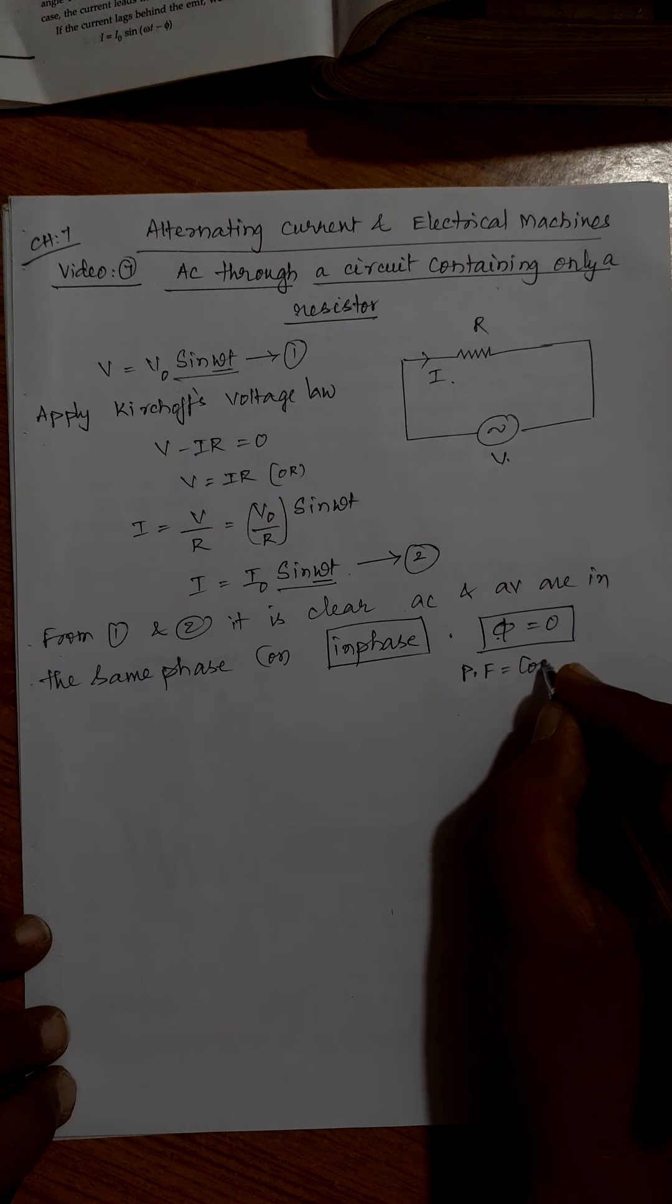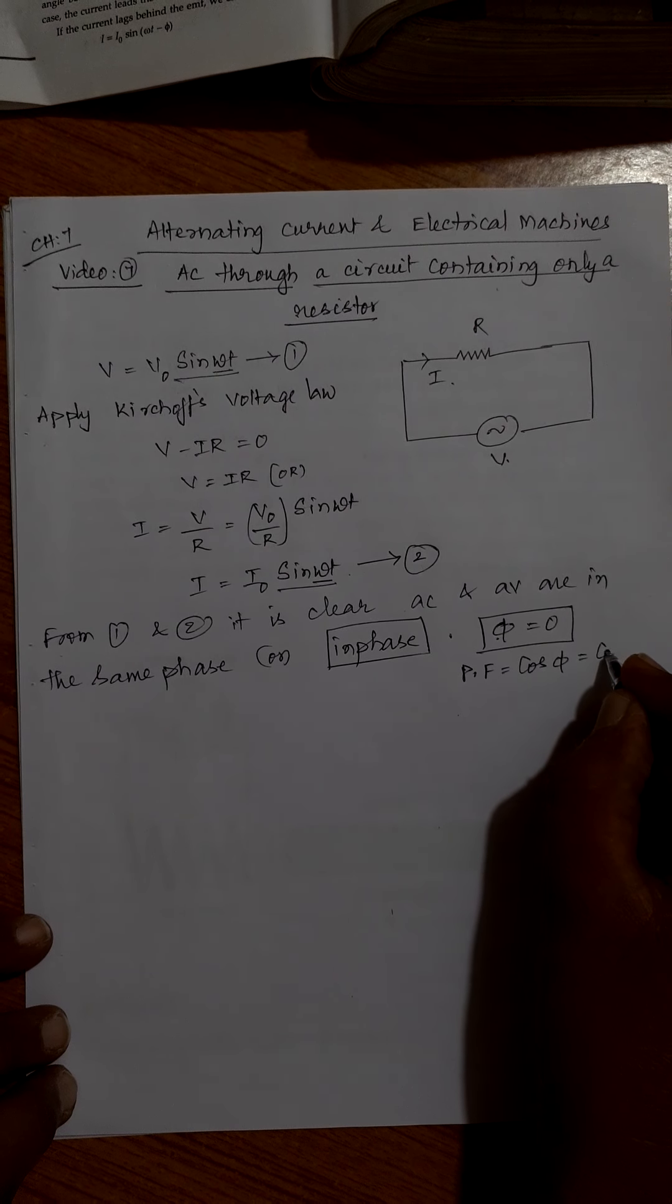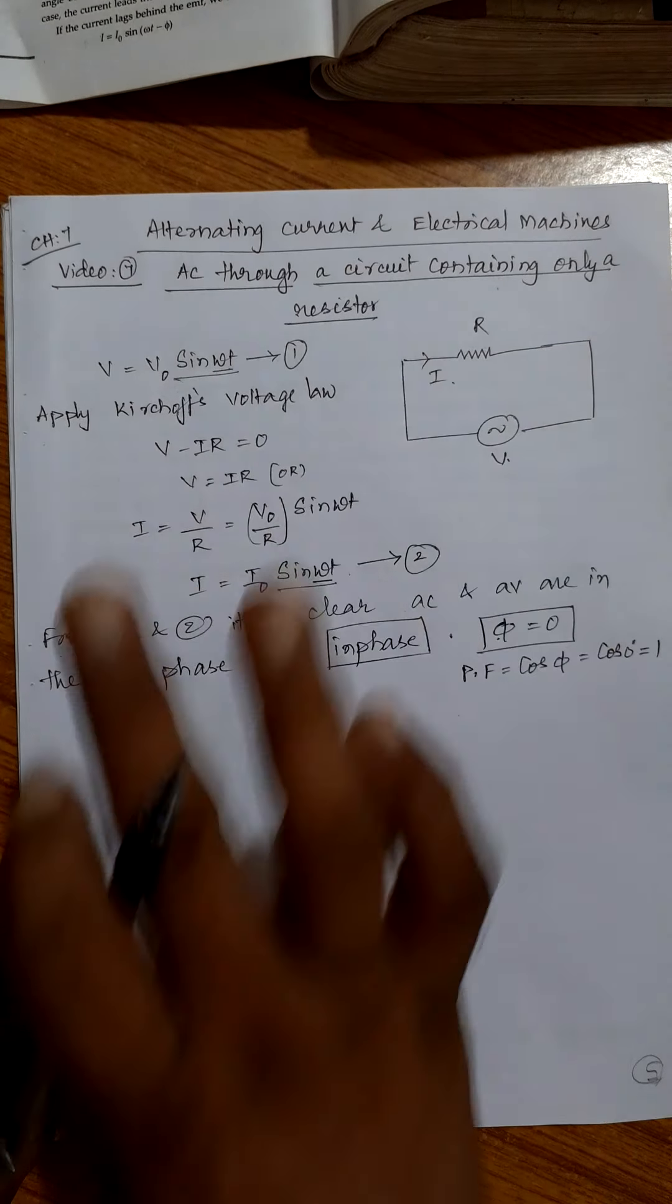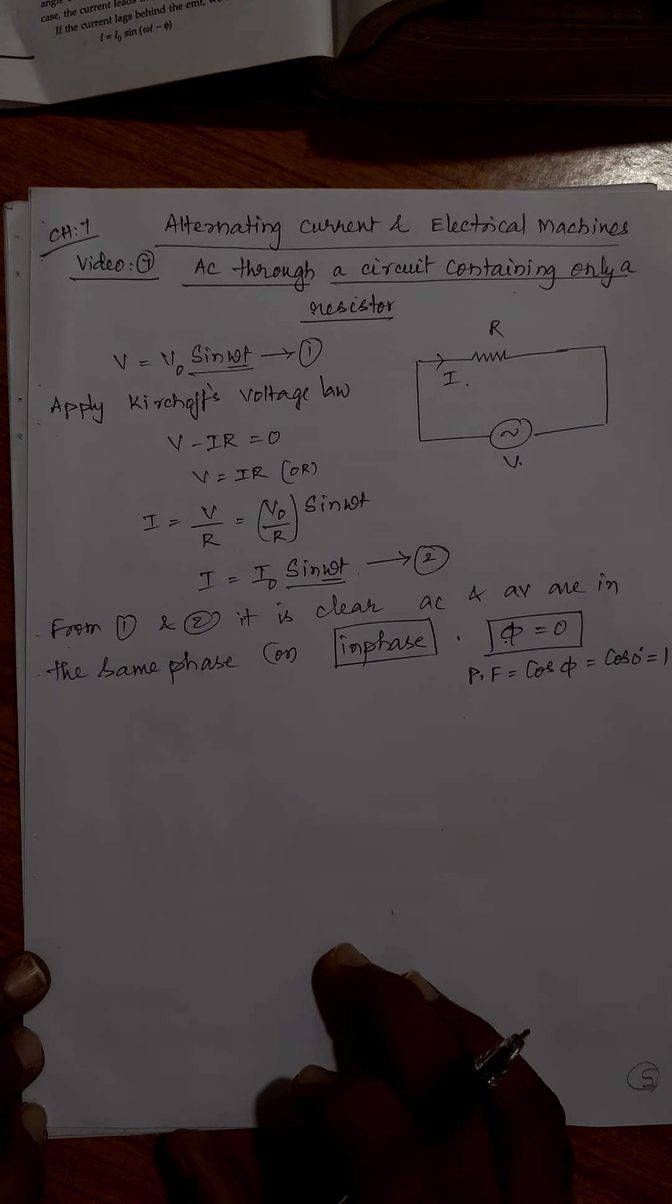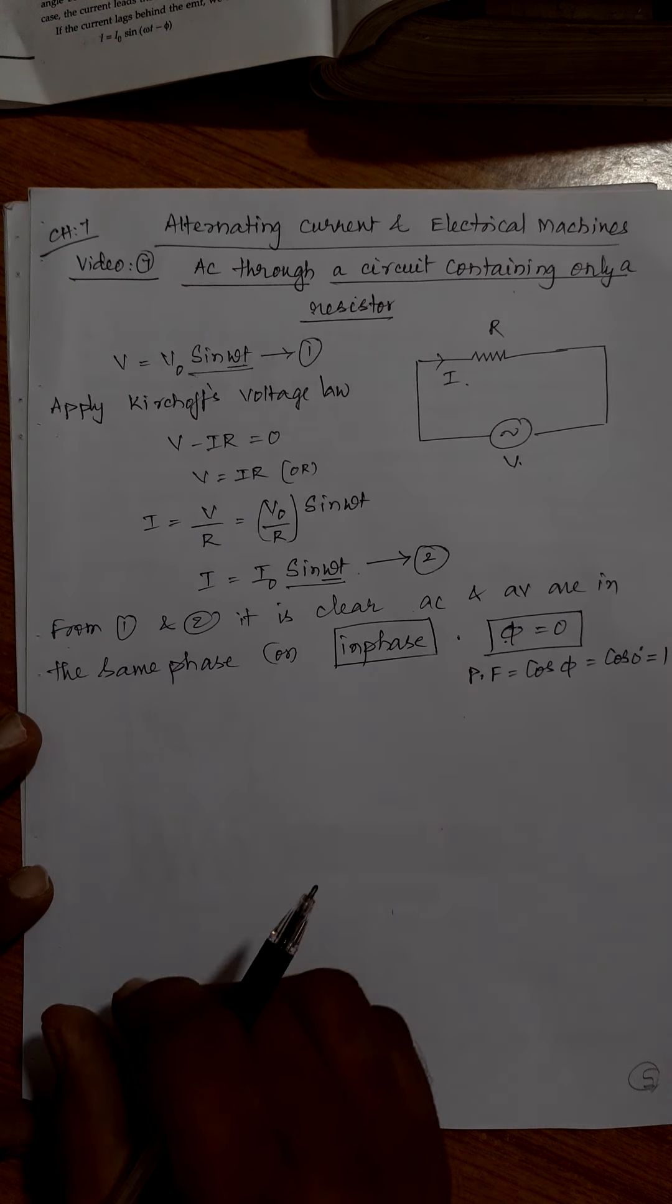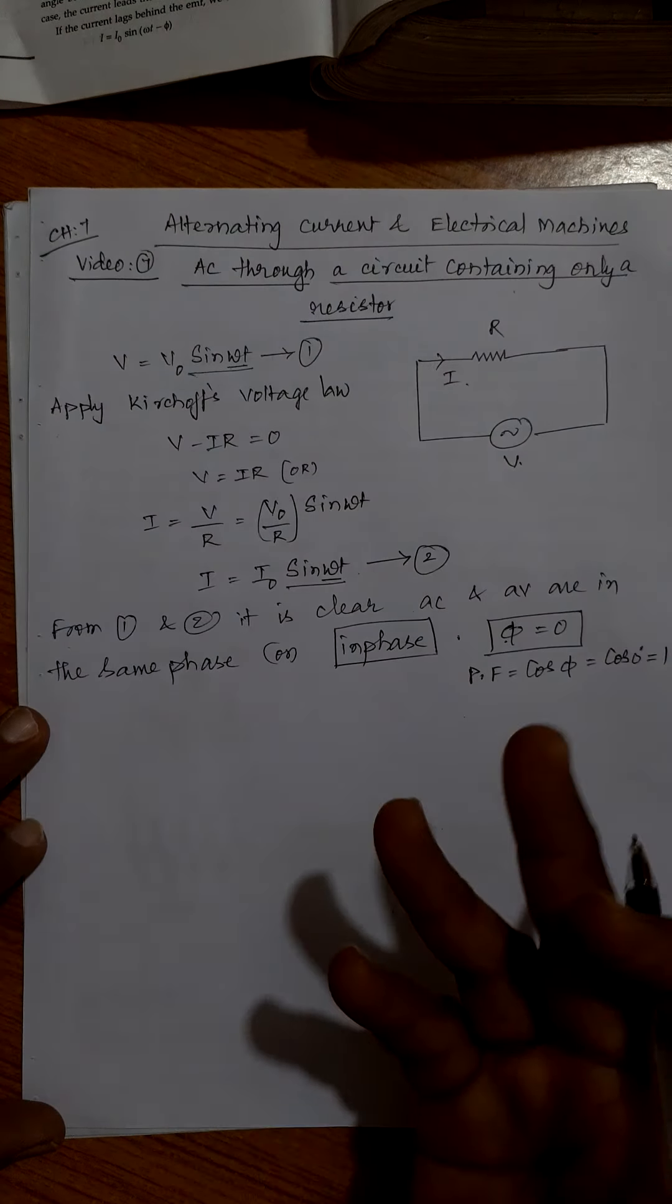In the previous video I have discussed about power. When phi is zero, power factor is cos phi. Cos phi means cos zero. Cos zero equal to one. So what is the value of power factor in such circuit?